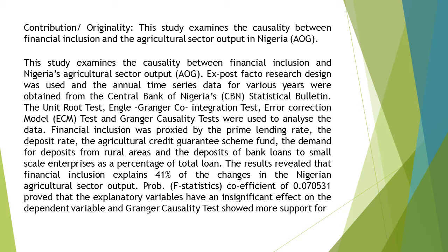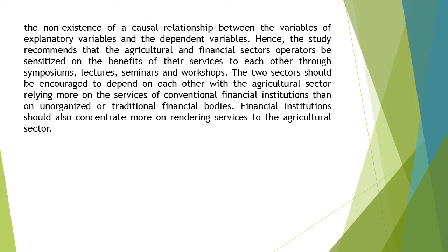The results revealed that Financial Inclusion explains 41% of the changes in the Nigerian Agricultural Sector Output. The F-Statistics coefficient of 0.070531 proved that the explanatory variables have an insignificant effect on the dependent variable, and the Granger Causality Test showed more support for the non-existence of a causal relationship between the explanatory variables and the dependent variables.